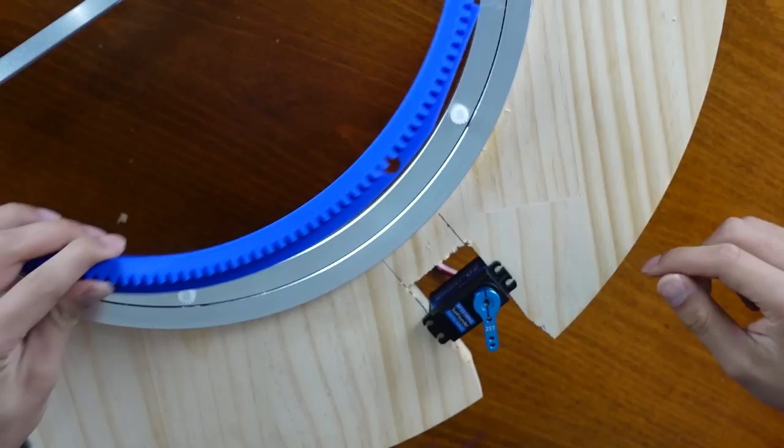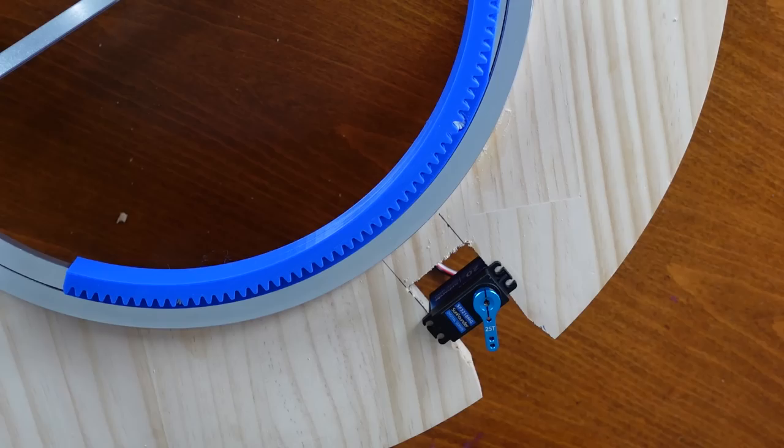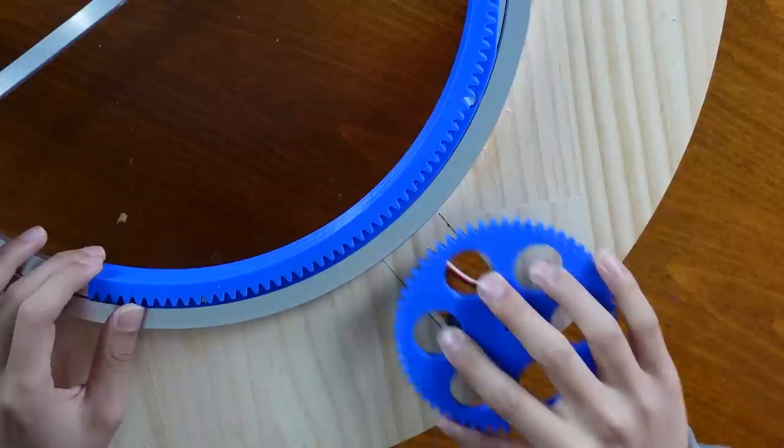Anyways, to rotate the horizontal bearing, I cut out a slot in the wood. This fits in like that. And then I 3D printed some gear parts to fit onto both the bearing and the servo. Just take this blue thing off, fit it on like that. And then we're good to go.